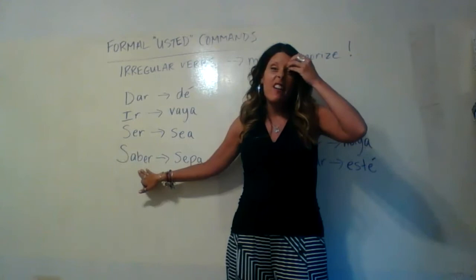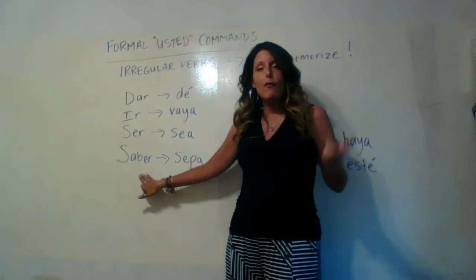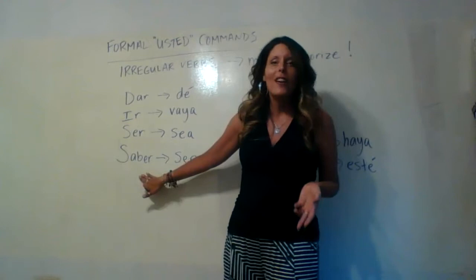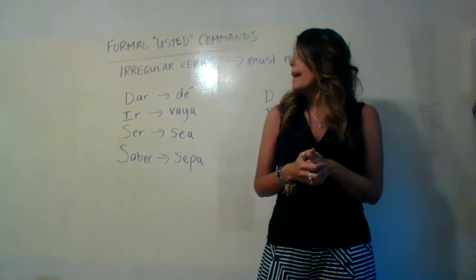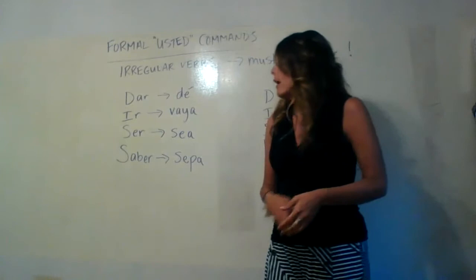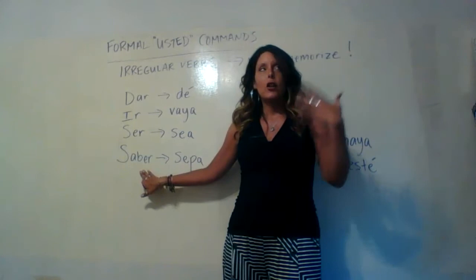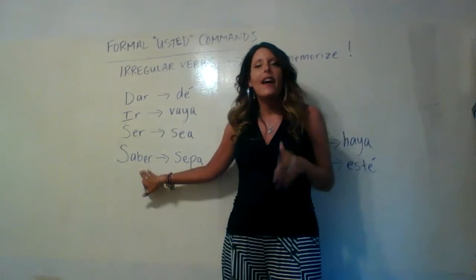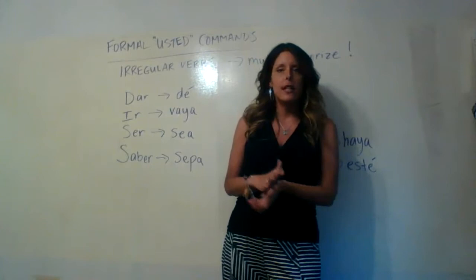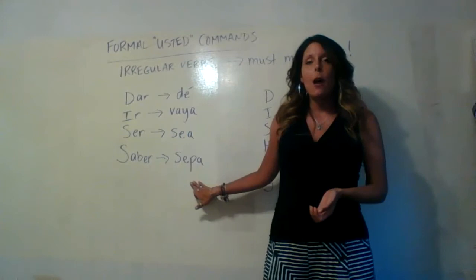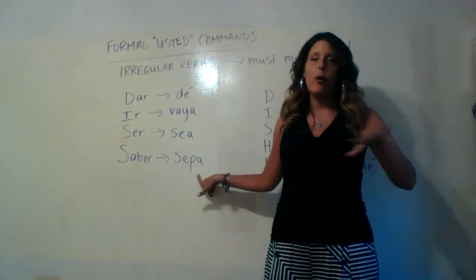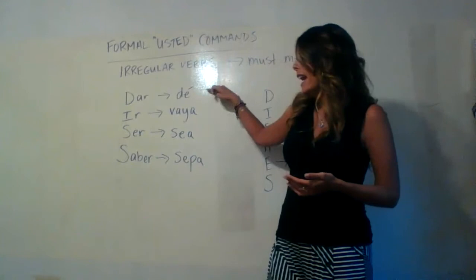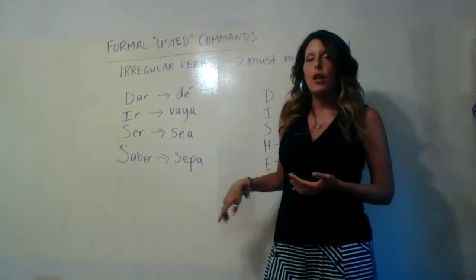Last but not least for the bare minimum to memorize is the verb saber. We have two ways to say 'to know' in Spanish: saber is to know things, facts, information, and conocer is to know people or to get to know. So for saber, if I gave a student a command and said 'know all your irregular verb usted commands,' I would say sepa — S-E-P-A. Please memorize that it is sepa. The four bare minimum formal usted commands are dé, vaya, sea, and sepa, from dar, ir, ser, and saber.